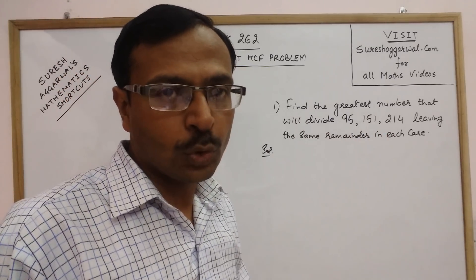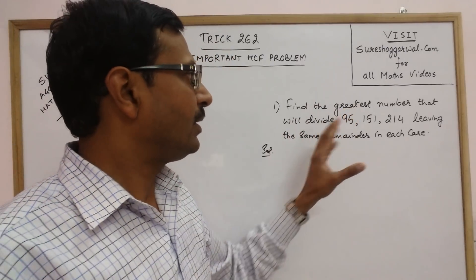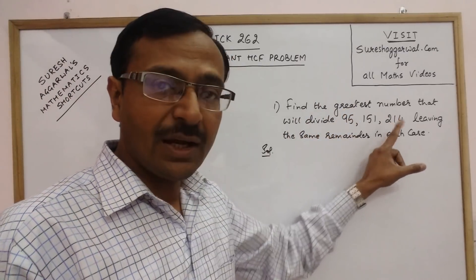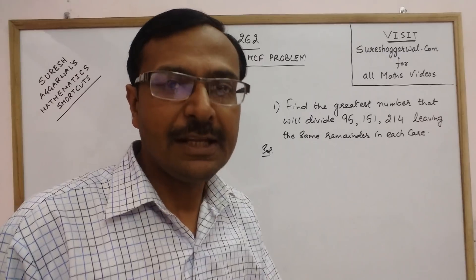Typical problem if you do not know the exact method. Greatest number which divides these three, leaving the same remainder in each case.